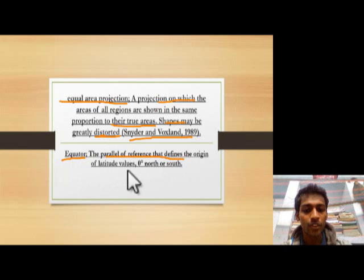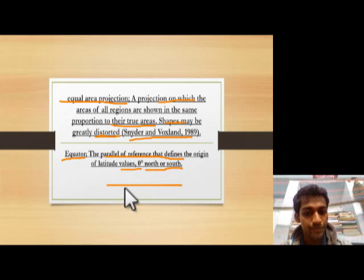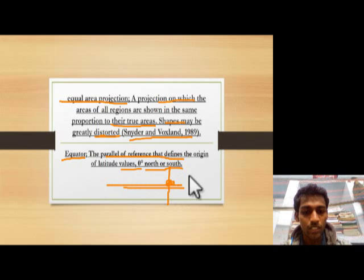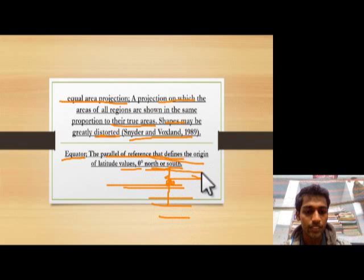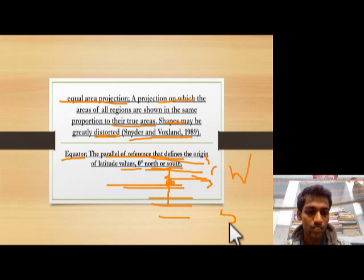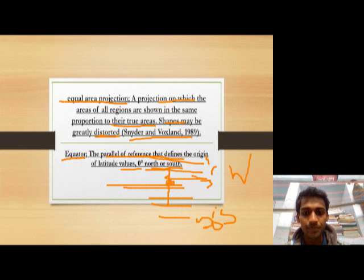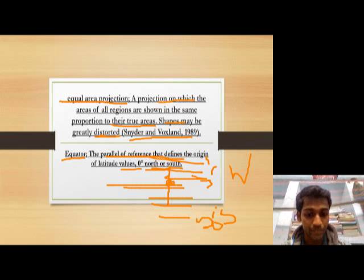Equator: the parallel of reference that defines the origin of latitude values — zero degrees north or south. It is 0°, with values going north and south up to 90°. Next time we will describe some other projection topics. Thank you for watching.